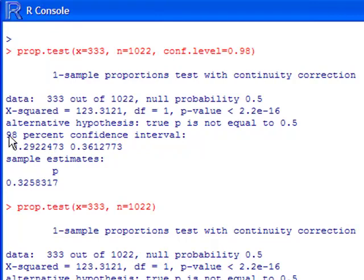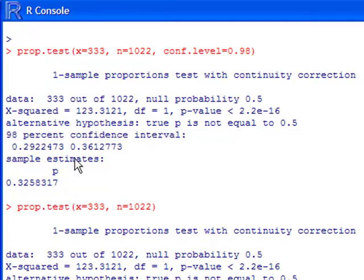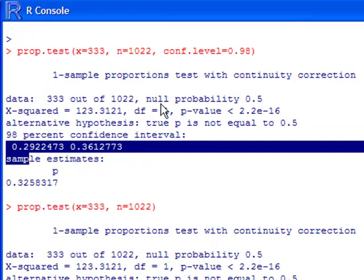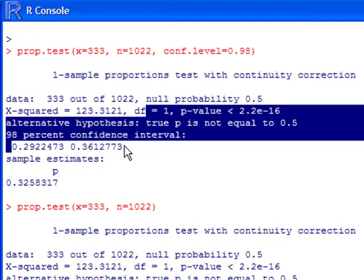Notice that we have right here our 98% confidence interval. It specifically says here's a 98% confidence interval, and our value goes from 0.29 to 0.36. Below, it gives us a sample estimate of our sample proportion.